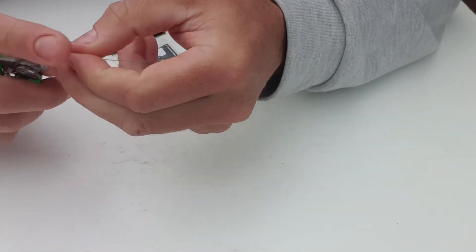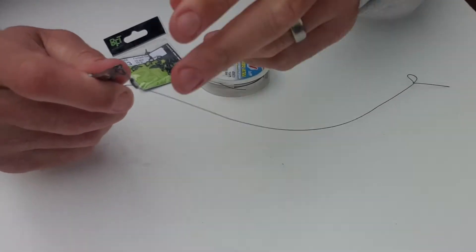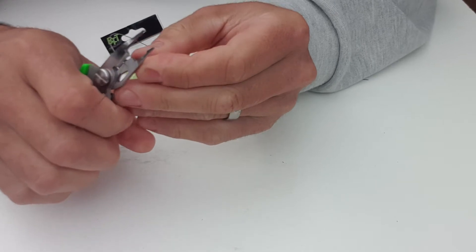Because I want to cut that tag end really close, but before I cut it I want to make sure that knot is cinched because you don't want that tag end pulling through.